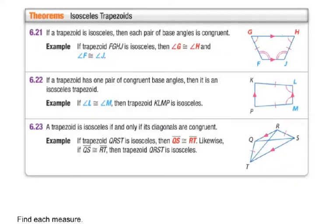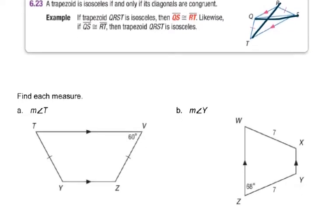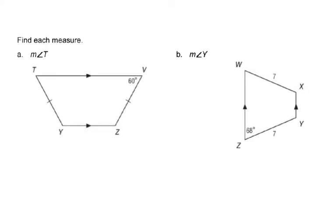The diagonals of an isosceles trapezoid will be congruent — so QS is congruent to RT. That will come into play later. Here it says find each measure. Find the measurement of angle T. Since it's an isosceles trapezoid, angle V and angle T must be congruent, so angle T is 60 degrees.